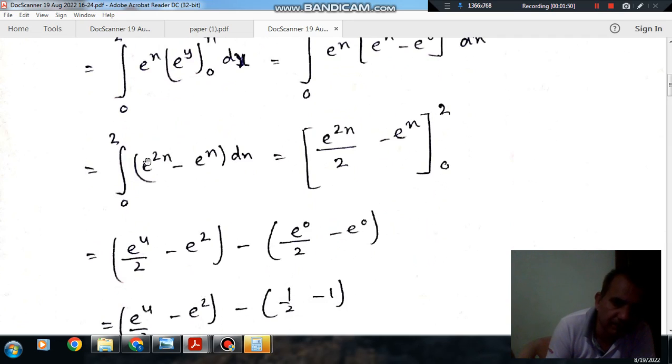If we put the limits of x, then it will be e⁴/2 minus e², the limit is 2, and this is limit 0: minus e⁰/2 minus e⁰.